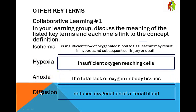Diffusion is reduced oxygenation of arterial blood. So you have ischemia, hypoxia, anoxia, and diffusion — and you should know those definitions.